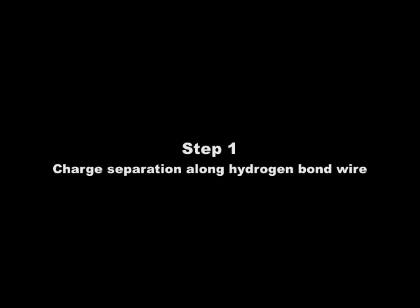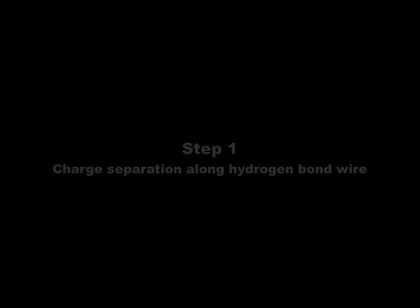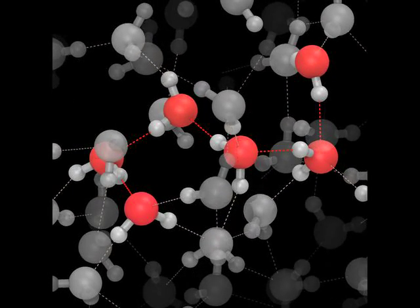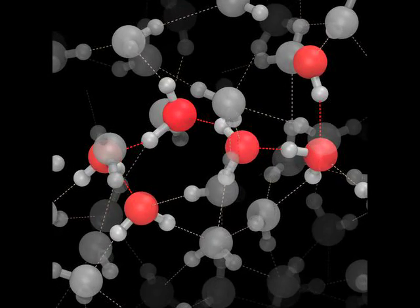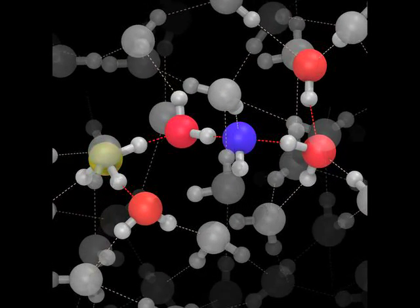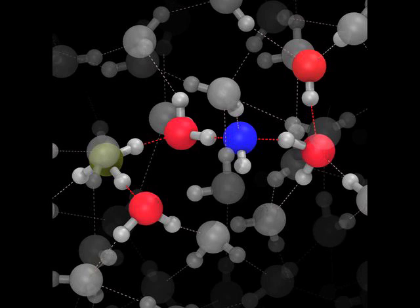As dynamics proceeds from this initial configuration, protons will move along the highlighted wire, and colors of the water molecules will change to help us resolve where protons are moving. Blue coloring highlights the hydroxide ion, an oxygen atom bound to just one proton. The yellow oxygen atom is bound to three protons. That's a hydronium ion.